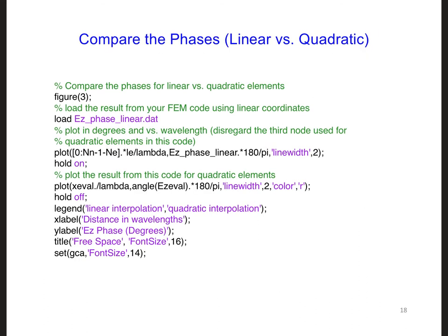And the last part of the code that I provided helps to plot the phase. So do the same thing here. Run the linear code first. Save the output from there so that here in the quadratic code you can load it in and plot it and compare it to the result with the quadratic elements.